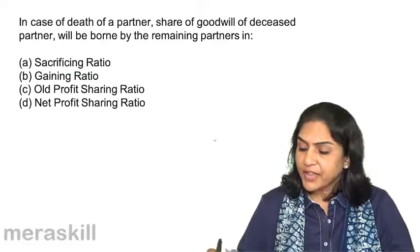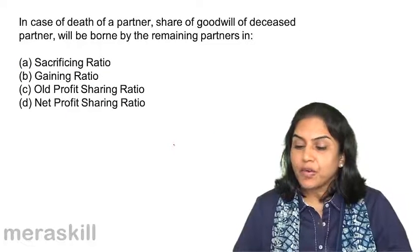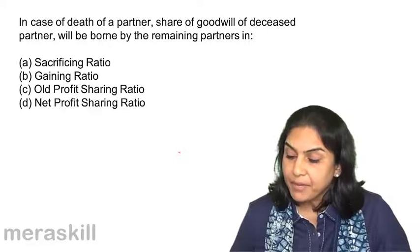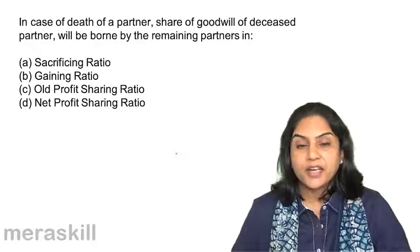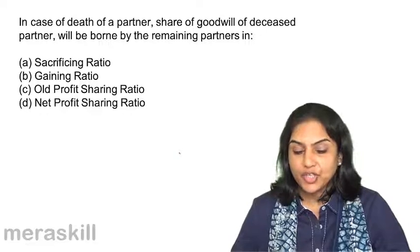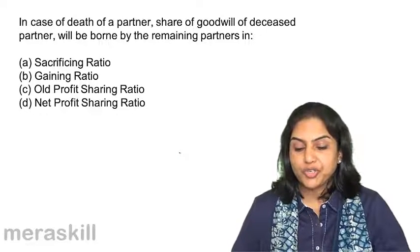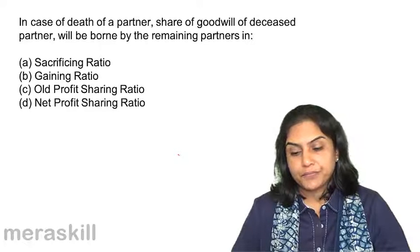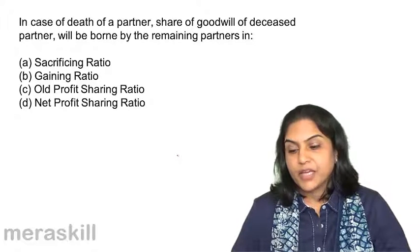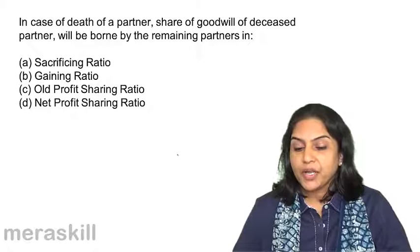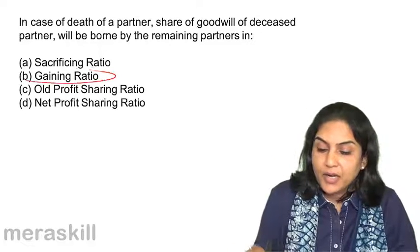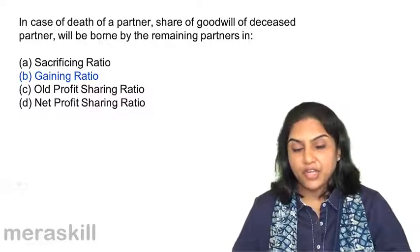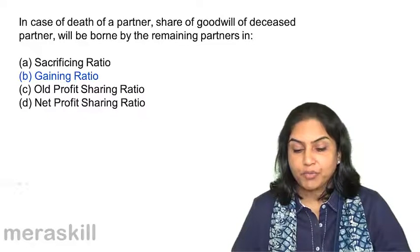In case of death of a partner, the share of goodwill of the deceased partner will be borne by the remaining partners in: A, sacrificing ratio; B, gaining ratio; C, old profit sharing ratio; D, net profit sharing ratio. In case of death, the share of goodwill will be borne by the remaining partners in the gaining ratio. Correct answer is B, option B.